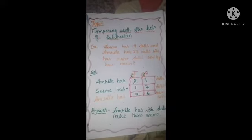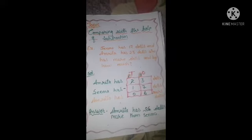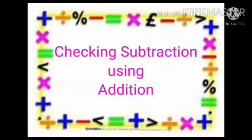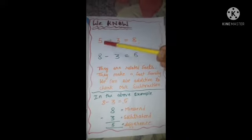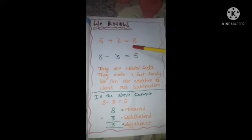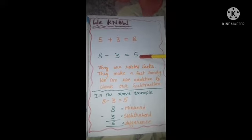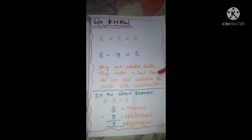So with the help of subtraction we can compare two numbers. Our next topic is checking subtraction using addition. We know 5 plus 3 equals 8, and 8 minus 3 equals 5. They are related facts — they make a fact family. We can use addition to check our subtraction.